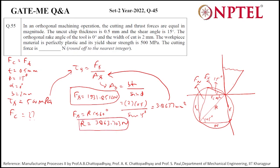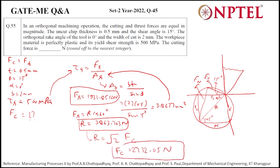After getting the resultant, since Fc and Ft are equal and form a square, the resultant is √2 times any side. So Fc equals R divided by √2, giving Fc = 2732.05 N. This is the final answer. For more details, refer to the lecture series on APCTL. Thank you.